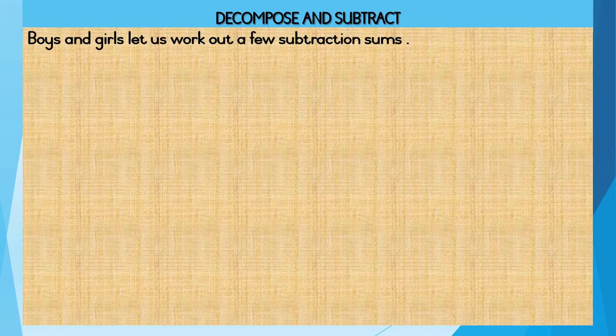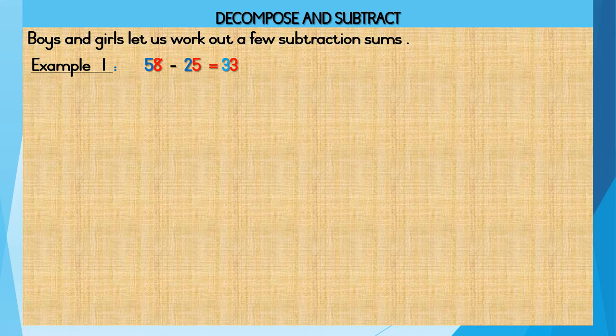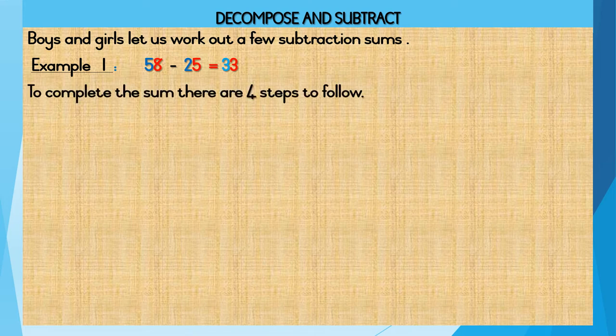Boys and girls, let us work out a few subtraction sums. Example 1: 58 minus 25 is equal to 33. How did we arrive at the answer 33? Yes, boys and girls, we use the decompose and subtract method. To complete the sum, there are four steps to follow.